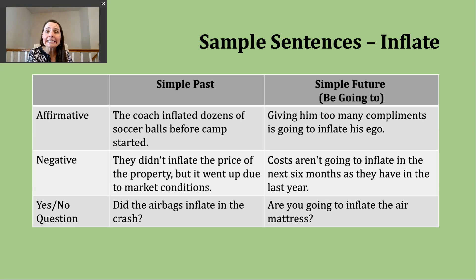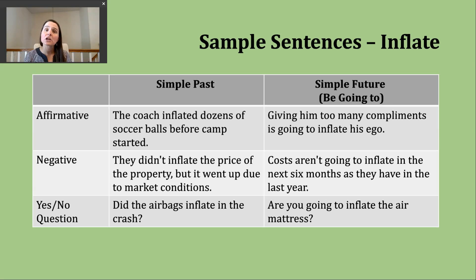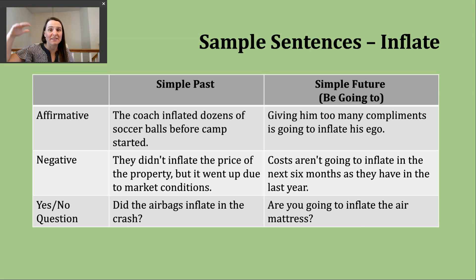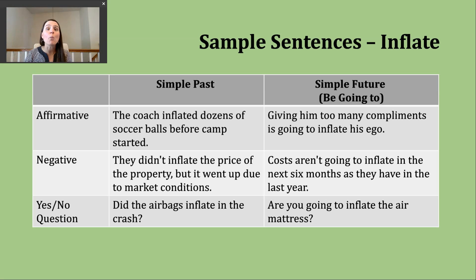For a negative simple past tense sentence, the structure is subject + did not (or didn't) + base verb. An example: they didn't inflate the price of the property, but it went up due to market conditions. Here, we're not suggesting someone made something larger than it should have been, but explaining what caused the price to increase.